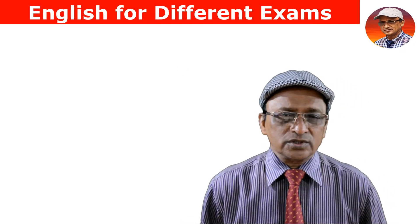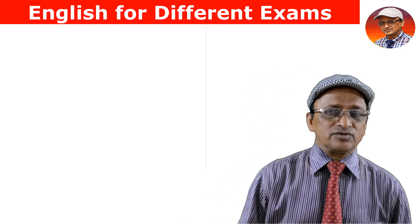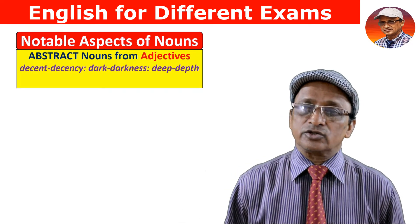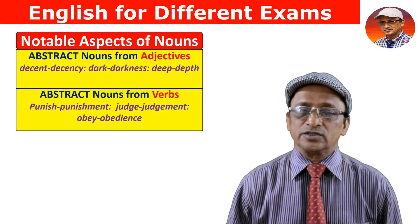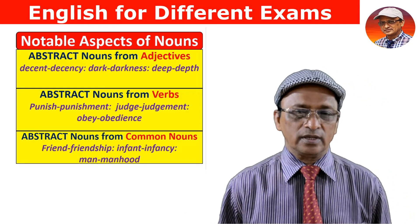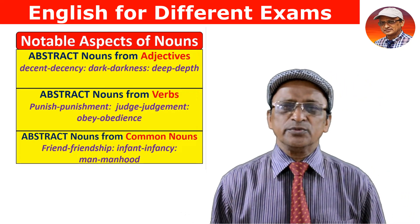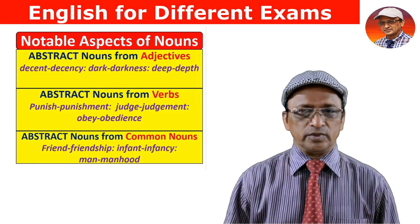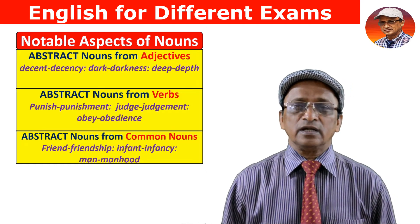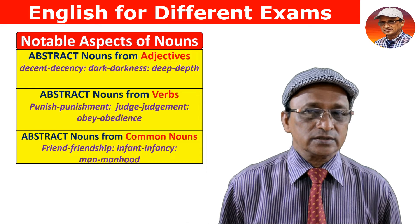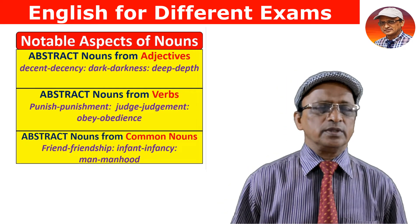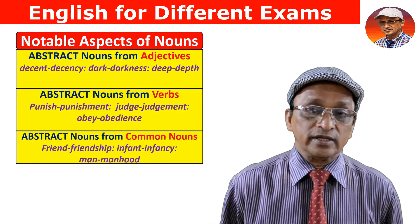Abstract nouns are formed in three ways: from adjectives, from verbs, and from common nouns. Adjectives give rise to abstract nouns — for example, 'decent' is an adjective, and 'decency' is the abstract noun. 'Dark' is an adjective; 'darkness' is the noun. 'Deep' is an adjective; 'depth' is the noun.